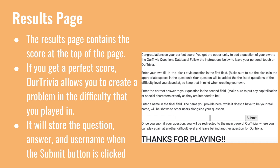At the end, after each round is played, it'll redirect to a results page. If you get a perfect score, Art Trivia will let you create a question in the difficulty you played in, and it'll store the question, answer, and username that you provide when the submit button is clicked. It'll also congratulate you for playing and prompt you to play again so that each player can leave as many questions behind as they feel like.